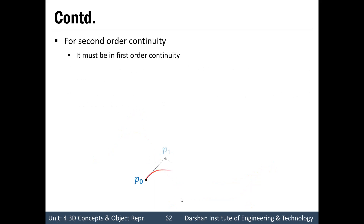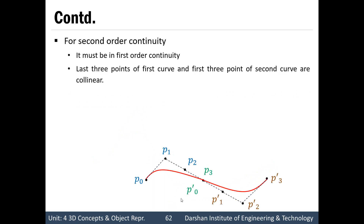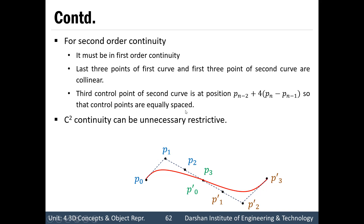For second-order continuity (C2), it must first satisfy C1 continuity. The additional restriction is that the last three control points of the first curve section (P3, P2, P1) and the first three of the second curve section (P0', P1', P2') must all be collinear and equally spaced. The spacing must satisfy: distance P1-P2 equals P2-P3, and equals P0'-P1' equals P1'-P2'. The position of P2' is calculated by the formula Pn-2 plus 4*Pn minus Pn-1, which ensures the control points are equally spaced.